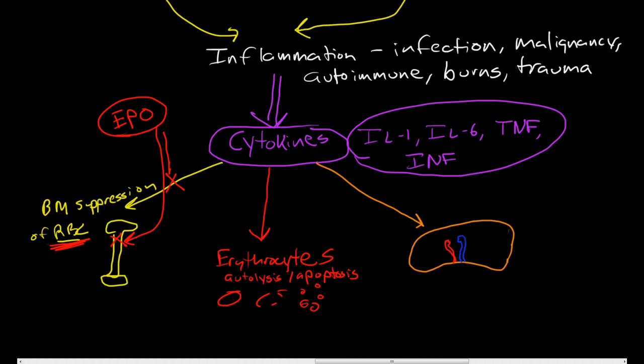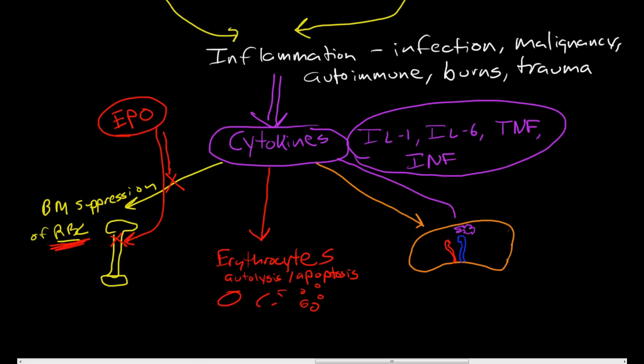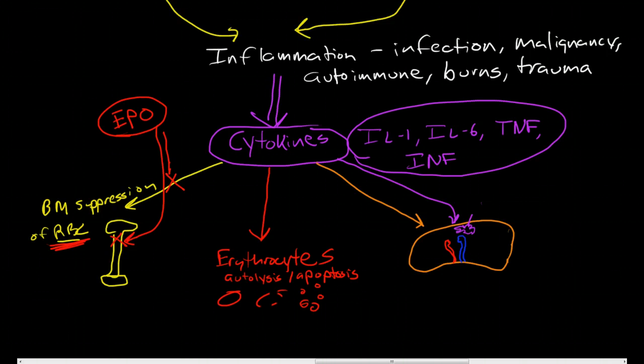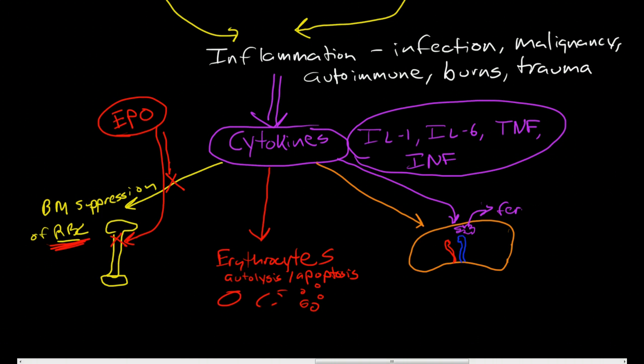These macrophages engulf senescent red blood cells. And the cytokines here actually inspire these macrophages to take up and store iron in the form of ferritin.